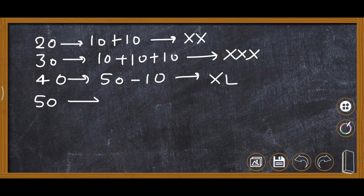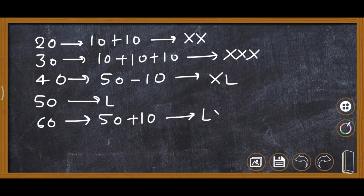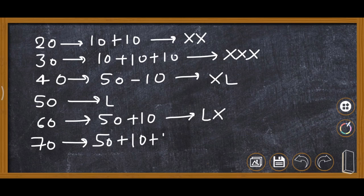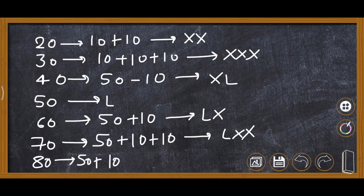50 is written as L. For 60, it is 50 plus 10, so it becomes LX — L comes first, then X, because it is addition. For 70, it is 50 plus 10 plus 10, so it is LXX. For 80, it is 50 plus 10 plus 10 plus 10, so it becomes LXXX.